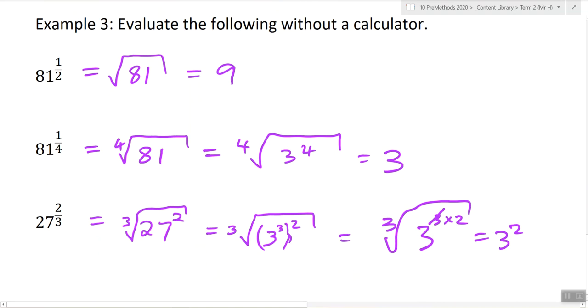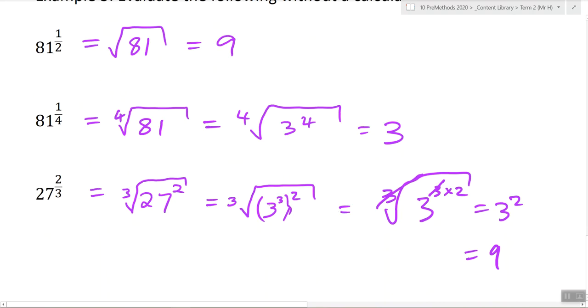Equals 9. So that one cancels out that one. Here's another way of showing it. 3. 3. So we've got 3 cubed, right? That's 27 squared.